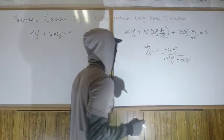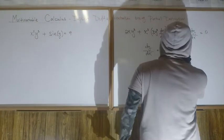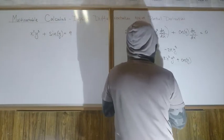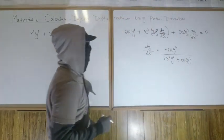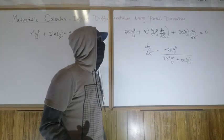...all over 3x²y² plus cosine of y. This is what dy/dx is going to be. So how do we do this using partial derivatives? I don't like this line, it's slanted, it's crooked. So there, feel much better, my day is going to be much better now.